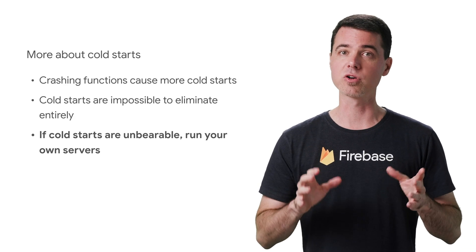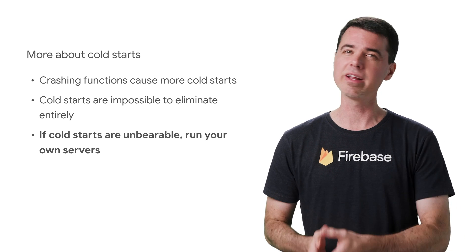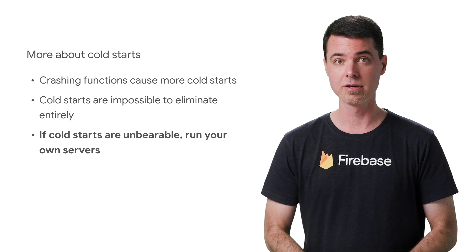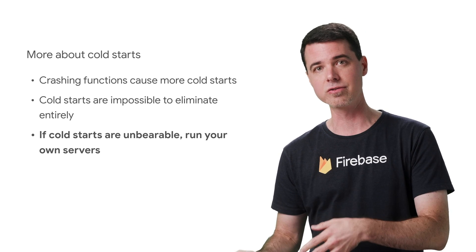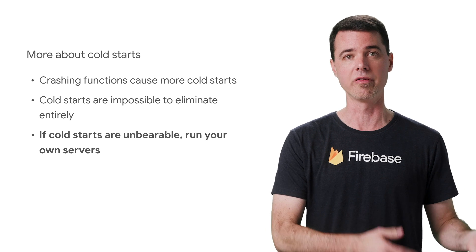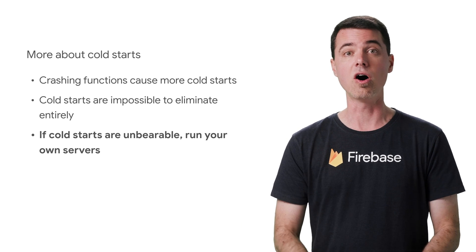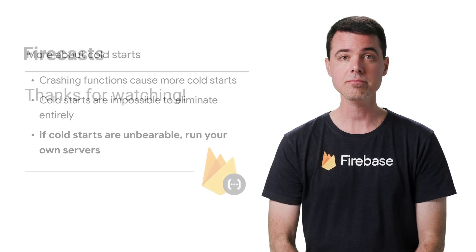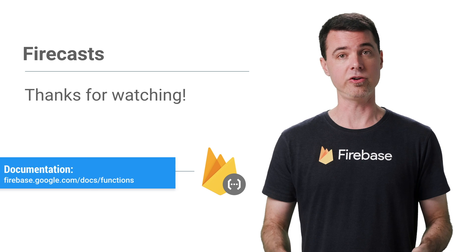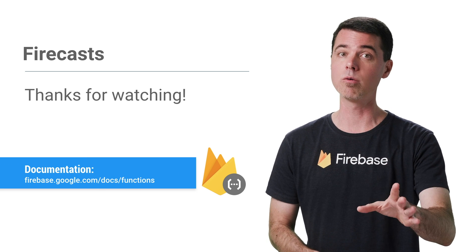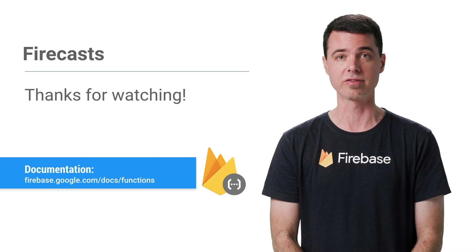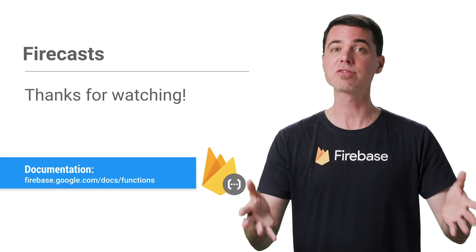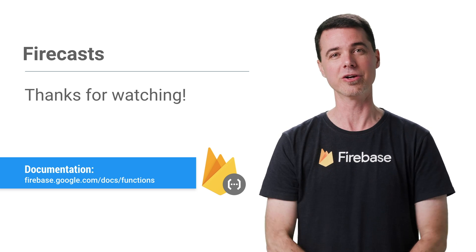But if the cold start times are unbearable for your application, you may want to consider running your own server instances using something like App Engine, which gives you more control over its behavior. If you do this, you're going back to the work of managing your own servers and paying for them to be available all the time, and you won't have direct access to all the background triggers offered by Cloud Functions. Cloud Functions can save you time and money during development, as long as you're aware of how it works and you're willing to write your code in a way that suits the system. I hope this series has been helpful. Thanks for tuning in to the Firebase channel on YouTube, and I'll see you here soon.